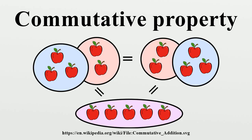Some binary truth functions are also commutative, since the truth tables for the functions are the same when one changes the order of the operands. For example, the logical biconditional function P↔Q is equivalent to Q↔P. This function is also written as P IFF Q, or as P↔Q, or as EPQ. The last form is an example of the most concise notation in the article on truth functions, which lists the 16 possible binary truth functions, of which eight are commutative.